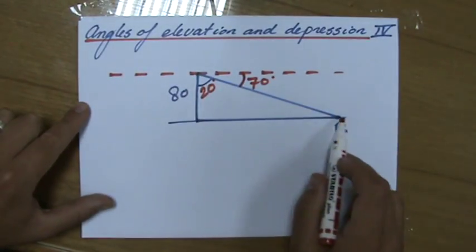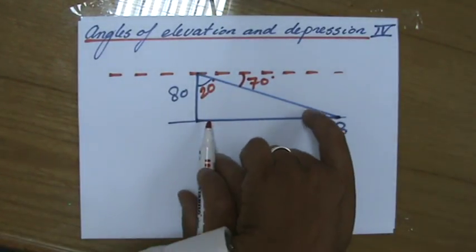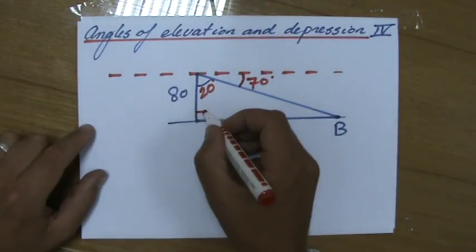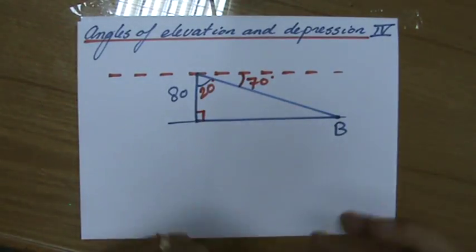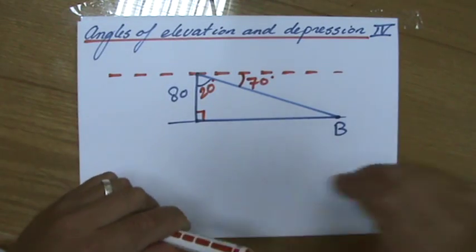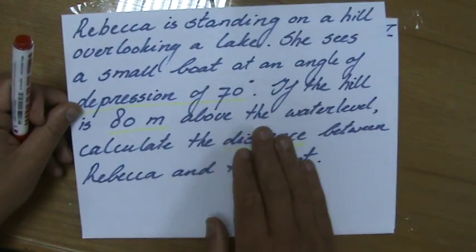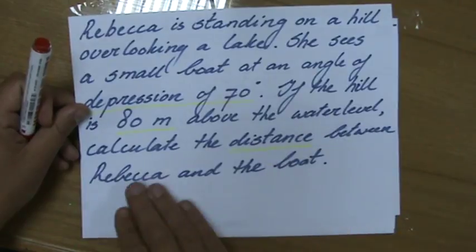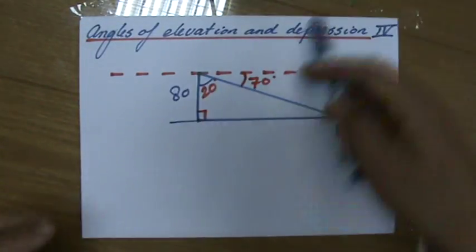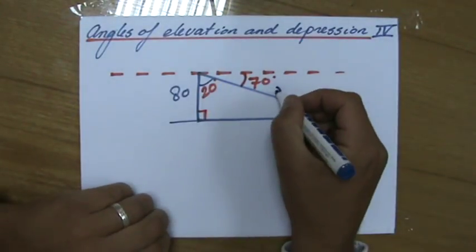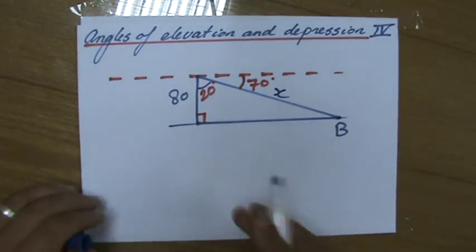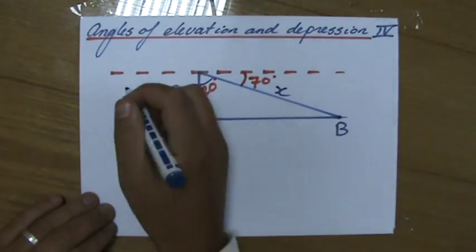Or you could have said that this angle is also 70 degrees. Anyway, angles of depression, be careful. What are they asking me? The distance between Rebecca and the boat. So let's put a big X there. That's my right-angled triangle. All the information is there. Now it's trigonometry.